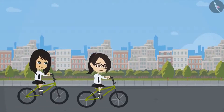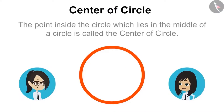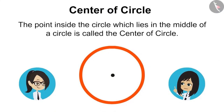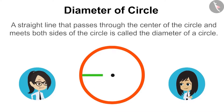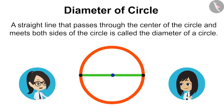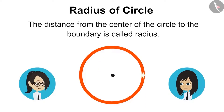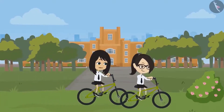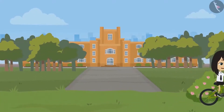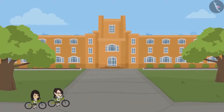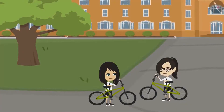Do you remember what the centre of a circle is? Yes, I remember. The point inside the circle which lies in the middle is called the centre of circle. A straight line that passes through the centre and meets both sides is called the diameter of circle. The distance from the centre to the boundary is called radius. To measure a circle, you can measure either radius or diameter, but radius will be easier to measure because it is smaller than diameter.